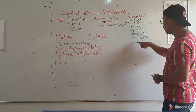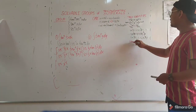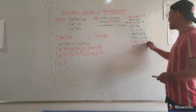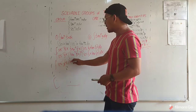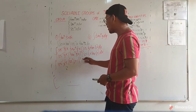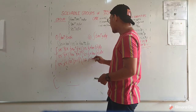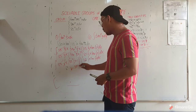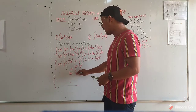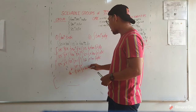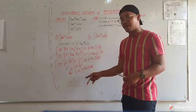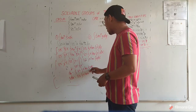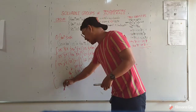Substituting, we have secant raised to negative 1 times secant squared one-third x minus 1, squared, times secant one-third x, tan one-third x, dx. Let u equal secant one-third x. Then du equals one-third secant one-third x, tan one-third x, dx. Dividing both sides by one-third, the result is 3du equals secant one-third x, tan one-third x, dx.